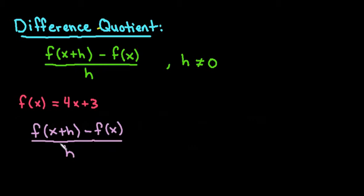So if we look at this first part right here, it's telling us that wherever there is an x in the f(x) equation, instead of writing x, we are going to write x+h.